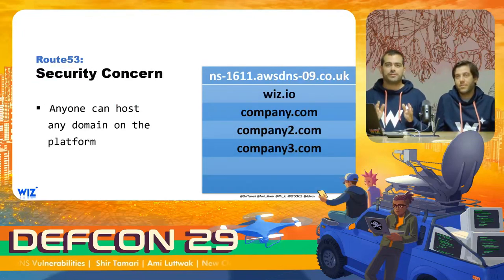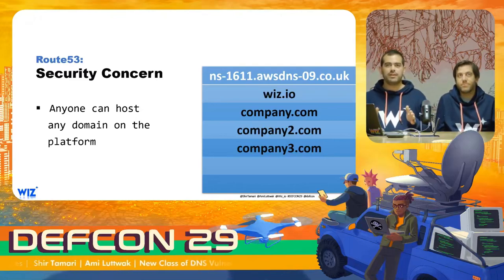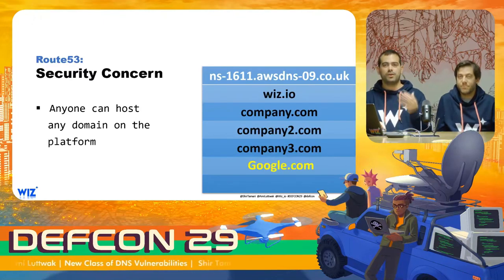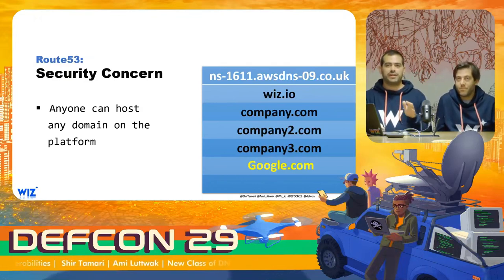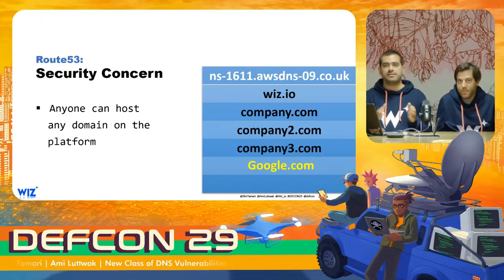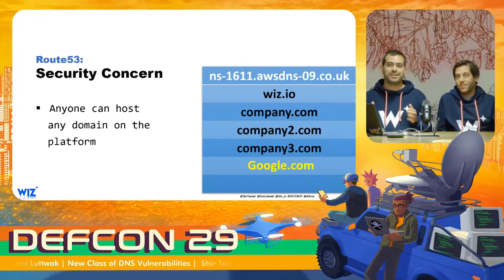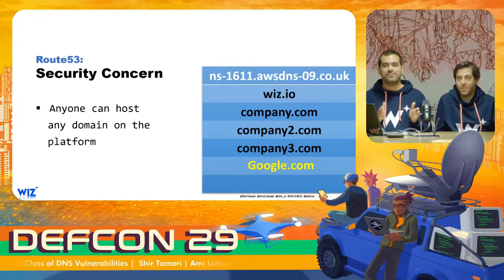While studying Route 53, we discovered that anyone can register any domain they want on the platform. There is no restriction on whether the domain is already hosted on the platform, and there is no ownership verification. The only limitation is that if the domain already exists in one of the name servers, it will not be possible to register it again on the same server. Basically, anyone can register any domain on any of the name servers as long as it does not already exist there.